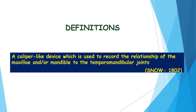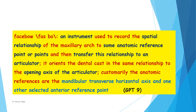First of all, we have to define the term facebow. According to Snow in 1802, it is a caliper-like device which is used to record the relationship of maxilla and/or mandible to the temporomandibular joint. The most popular definition is by the Glossary of Prosthodontic Terms, 9th edition: it is an instrument used to record the spatial relationship of maxillary arch to some anatomic reference point or points and then transfer this relationship to an articulator.